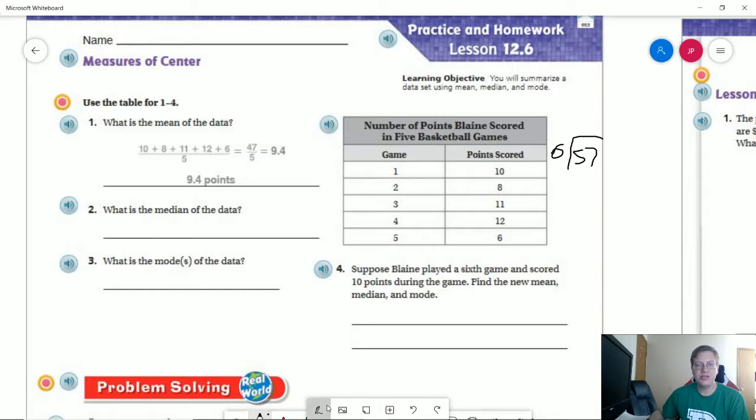So number 2, the median is going to be our center point for all of these if we put them in order. So we have 5 data points right now. 6, 8, and then 10 would be the middle one. Our mode would be any number that repeats more than once. We do not have one. So I'm going to put none.